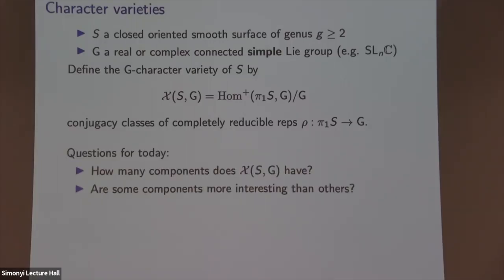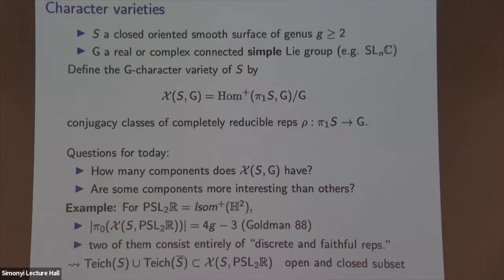The questions I want to talk about today are some basic topological questions, like how many connected components does this space have? And a more vague question: are there any components which are kind of extra special? For the group PSL₂ℝ, which is the isometry group of the hyperbolic plane, Bill Goldman proved that this character variety has 4g minus 3 components, and two of them are extra special.